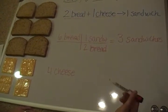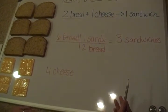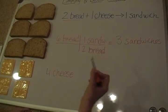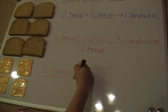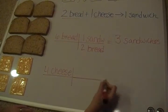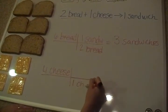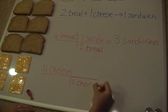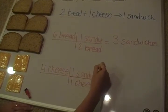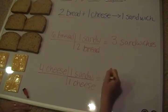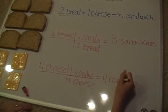So six pieces of bread is able to yield us three sandwiches, and that will be the most number of sandwiches we can make, assuming we have enough cheese to make three sandwiches. Now let's look at our cheese. We have four slices of cheese. For each sandwich, you need to have at least one slice of cheese. With one slice of cheese making one sandwich, that means with four slices of cheese, we're able to make four cheese sandwiches.